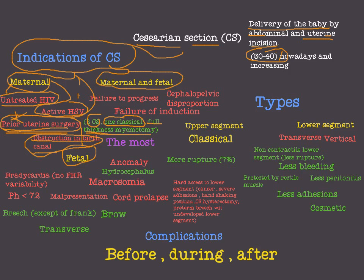Now the fetal indications for caesarean section. The first is bradycardia and no fetal heart rate variability. Also pH below 7.2. So fetal distress in general is a fetal indication.